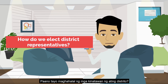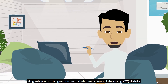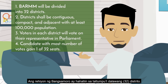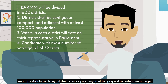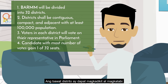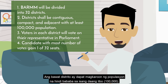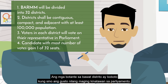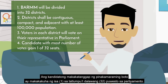How do we elect our district representatives? The Bangsa Moro region will be divided into 32 districts. The districts are created based on population and geographical area. Each district shall be contiguous, compact, and adjacent, and shall have a population of at least 100,000. Voters in each district will vote on who they want as their representative in Parliament. The candidate receiving the most number of votes will gain 1 out of the 32 seats in Parliament.